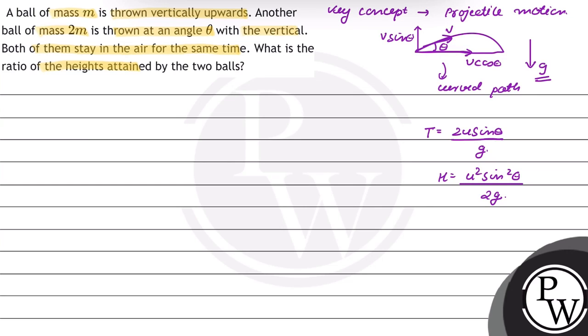This question is given as a ball of mass m is thrown vertically upwards. So this ball of mass m, theta will be equal to 90 degree, and another ball of mass 2m is thrown at an angle theta with the vertical. So this will be taken as theta dash from the horizontal.